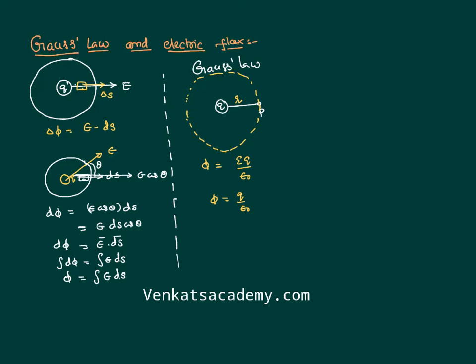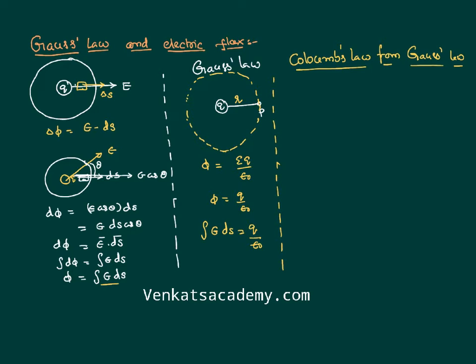If positive charges are dominating, the effective flux will be outward. The flux is the line integral ∮ E · dS, and according to Gauss's law we can write ∮ E · dS = q / ε₀. Now we would like to apply Gauss's law to derive Coulomb's inverse square law. We imagine a positive charge and want to calculate the electric field intensity at a point P at distance r from the charge. We first imagine a Gaussian surface so that the point P lies on the surface.